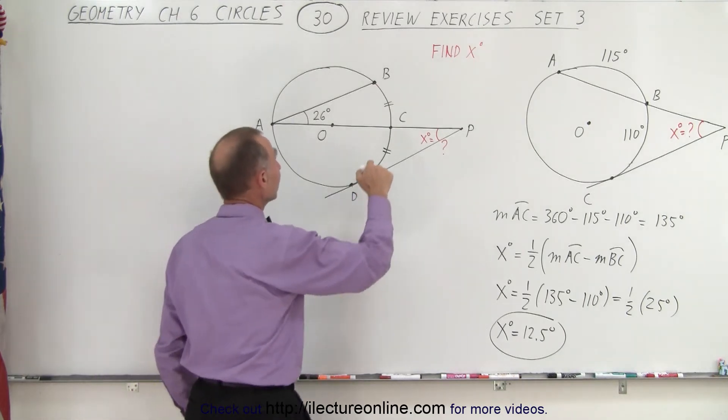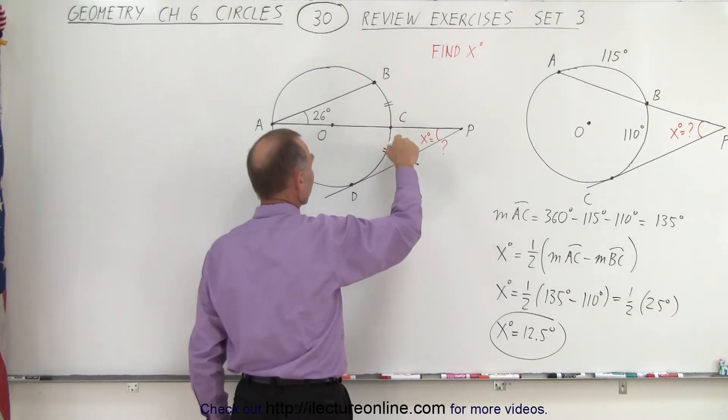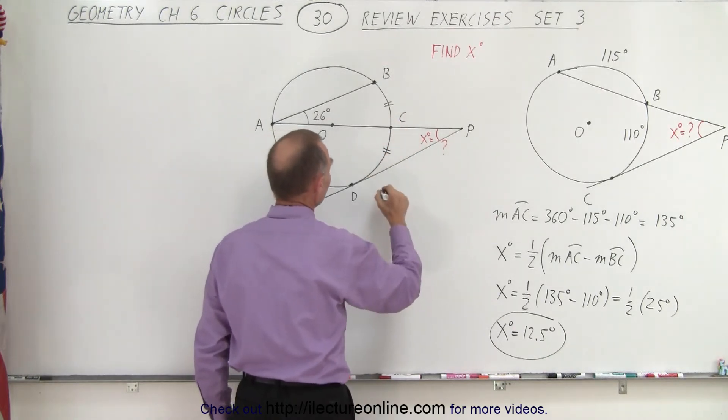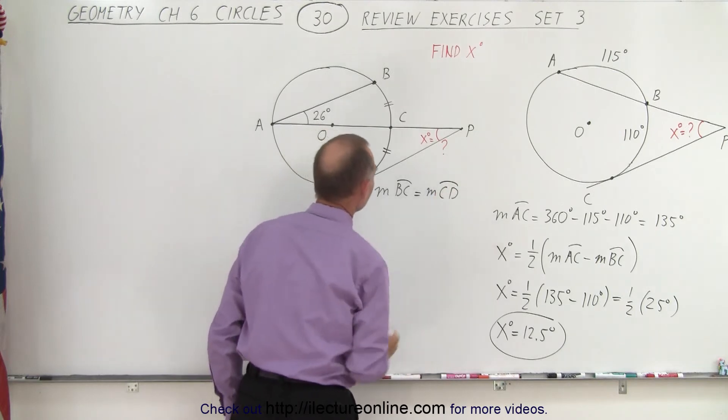But we are given that the arc length from B to C is equal in measure to the arc length from C to D in measure. So we can say that the measure from B to C is equal to the measure from C to D. All right. That we know.